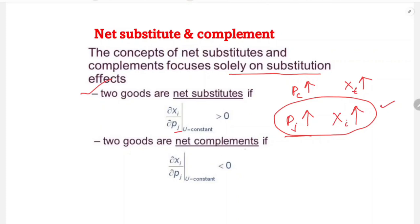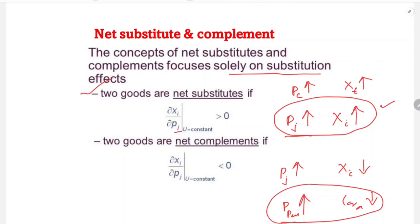If the partial derivative of xi with respect to pj, with utility held constant, is less than zero, there is a negative relationship between the two goods — they are net complements. For example, petrol and car: if the price of petrol increases, the demand for cars decreases. This negative relationship means the goods are net complements.